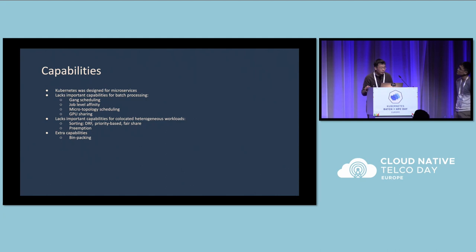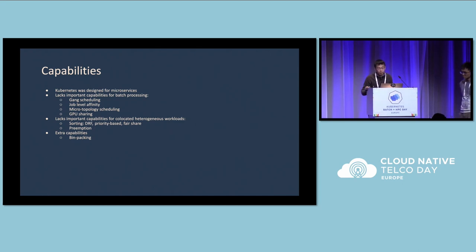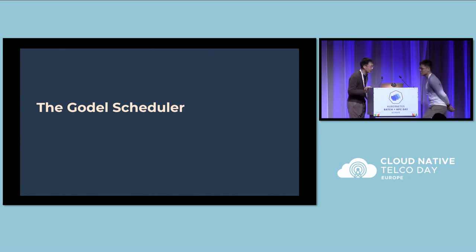Kubernetes also lacks some capabilities for collocated workloads, such as sorting, dominant resource fairness, and priority-based scheduling — as well as fair share. The last issue I want to address is preemption. Especially when collocating all of our workloads together, preemption is very, very complicated. For the next section, please welcome Ho Jia to share. Thank you.